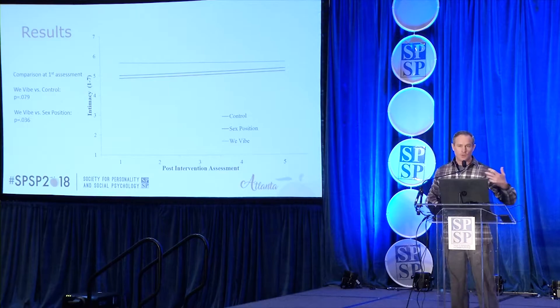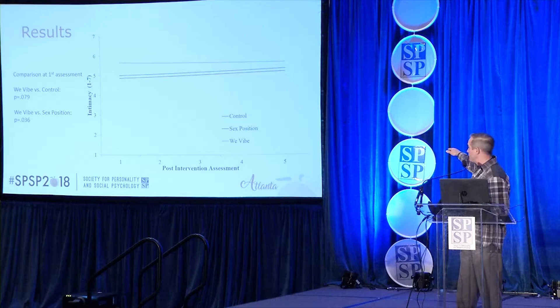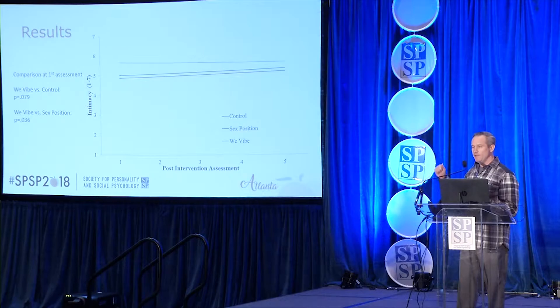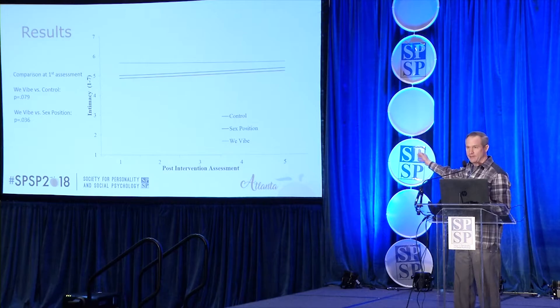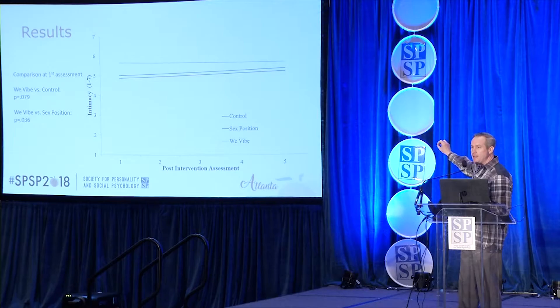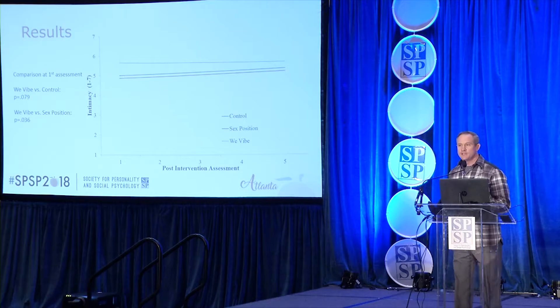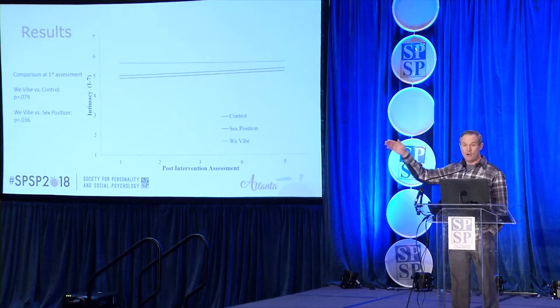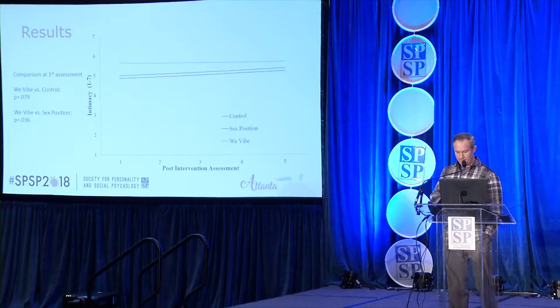We first looked at the difference between conditions at baseline, then at subsequent time points. You can see the groups seem to reconverge by the fifth assessment, and there is some evidence of a mean difference in intimacy. However, those p-values did not meet our threshold for statistical significance. When I say the means are higher, I just mean they are numerically higher—statistically, the test did not meet our threshold.